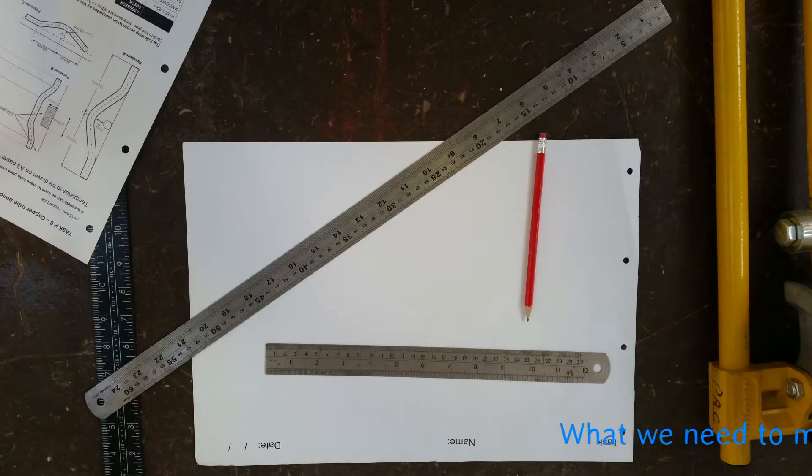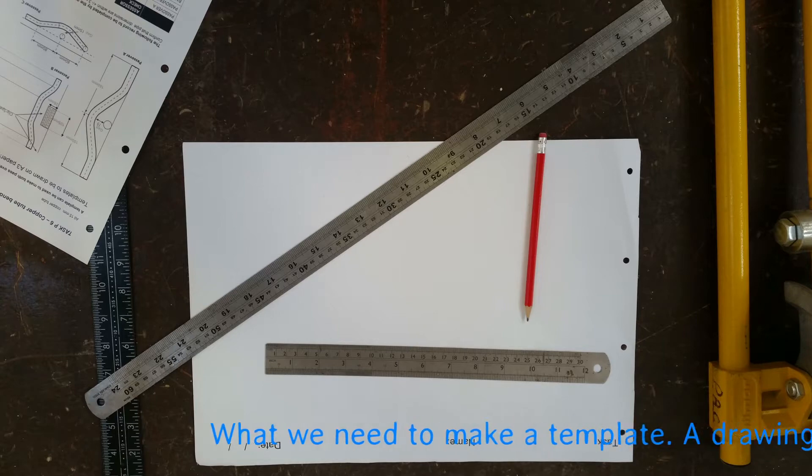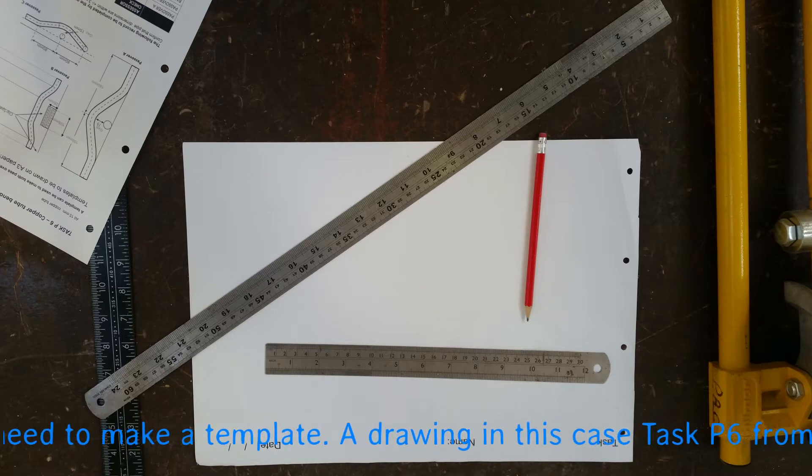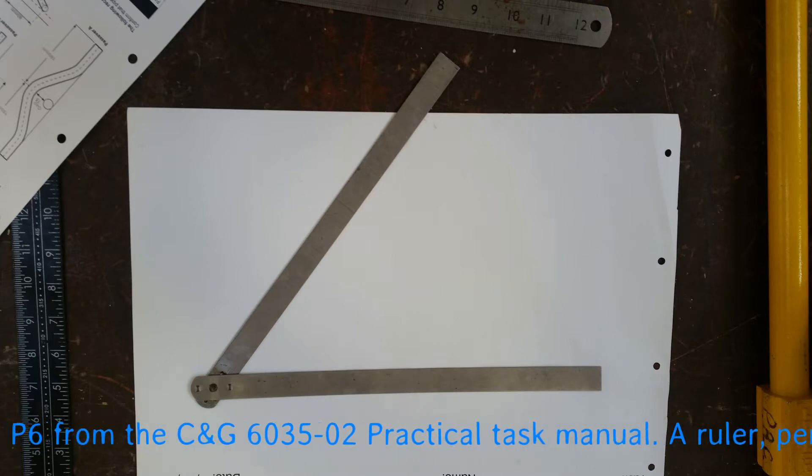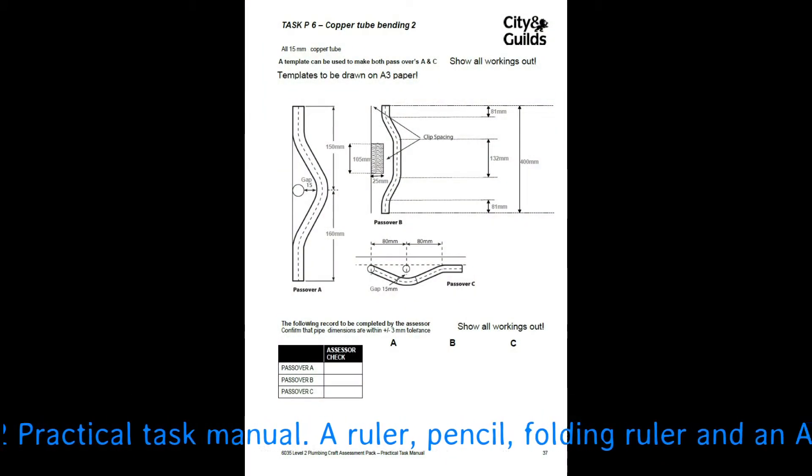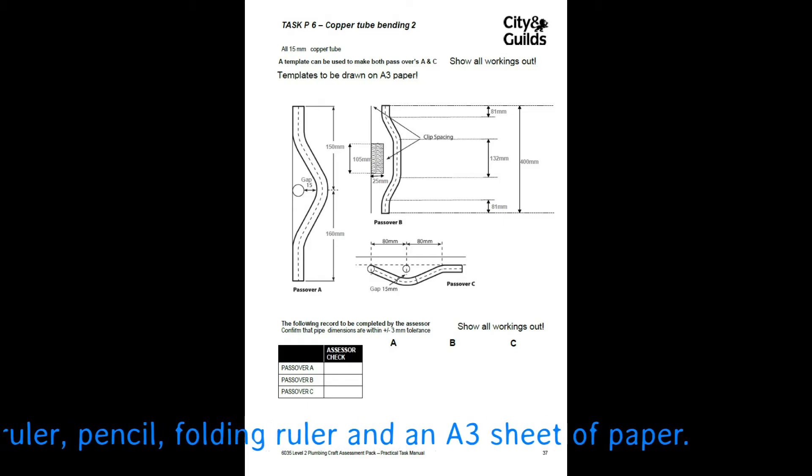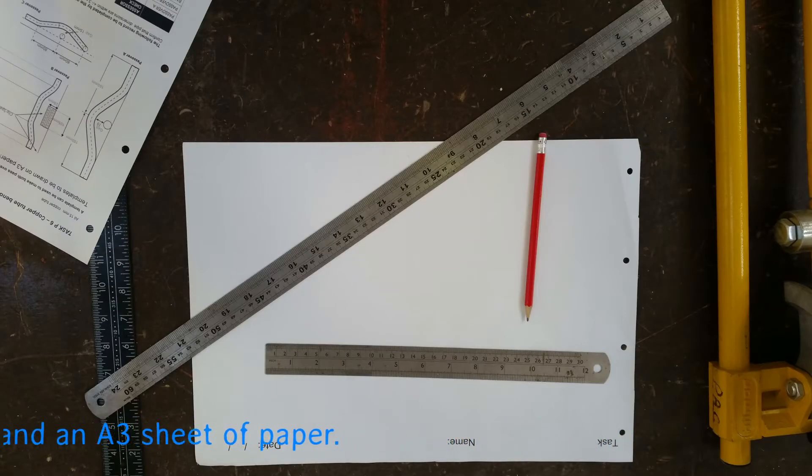With this video I'm going to show you how to make a template. What do we need to make a template? We need a drawing, in this case Task P6 from the City & Guilds 6035 book, a practical task manual, a ruler, a nice sharp pencil, a folding ruler and an A3 sheet of paper.